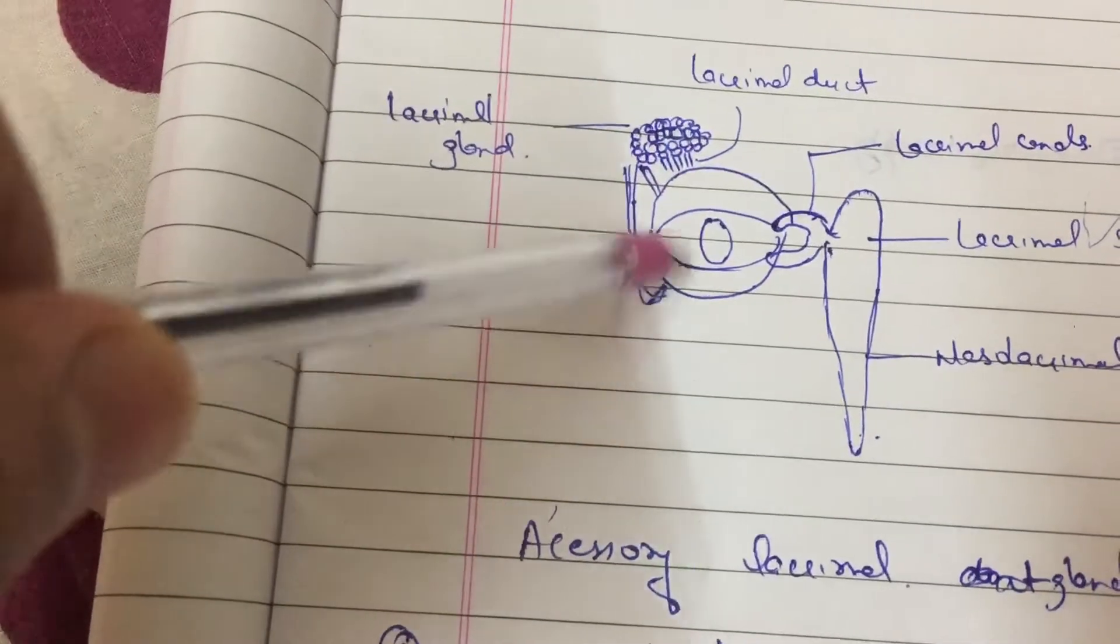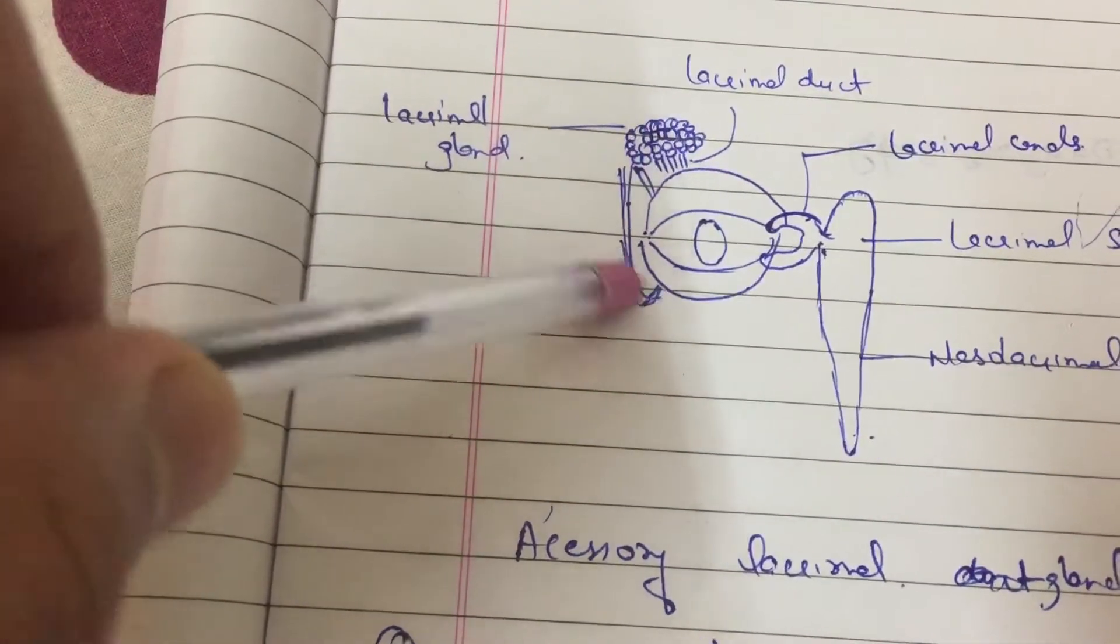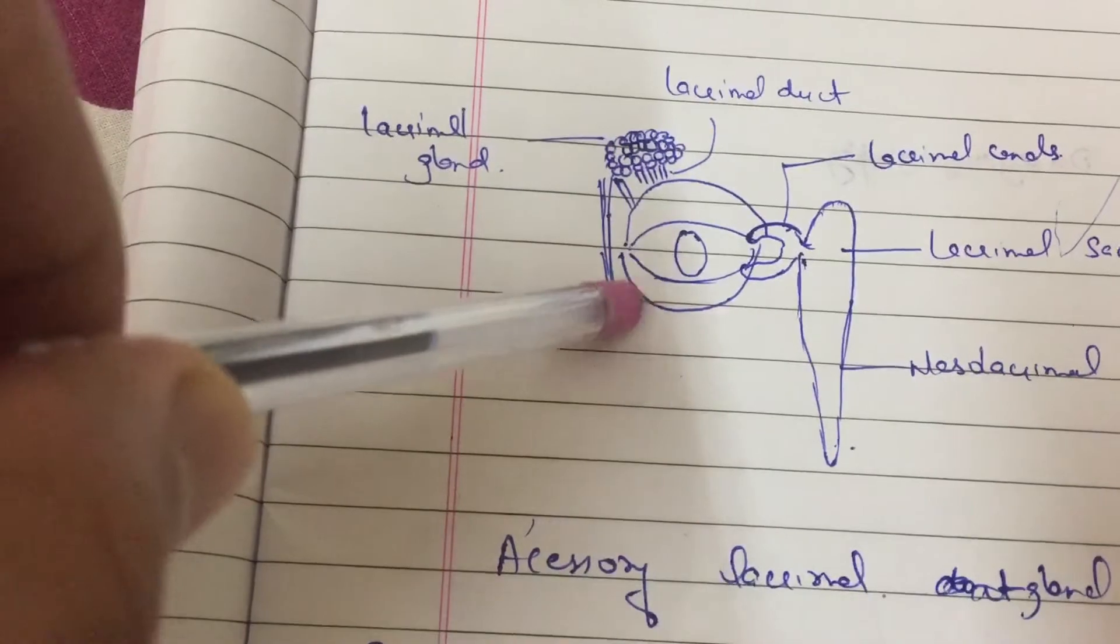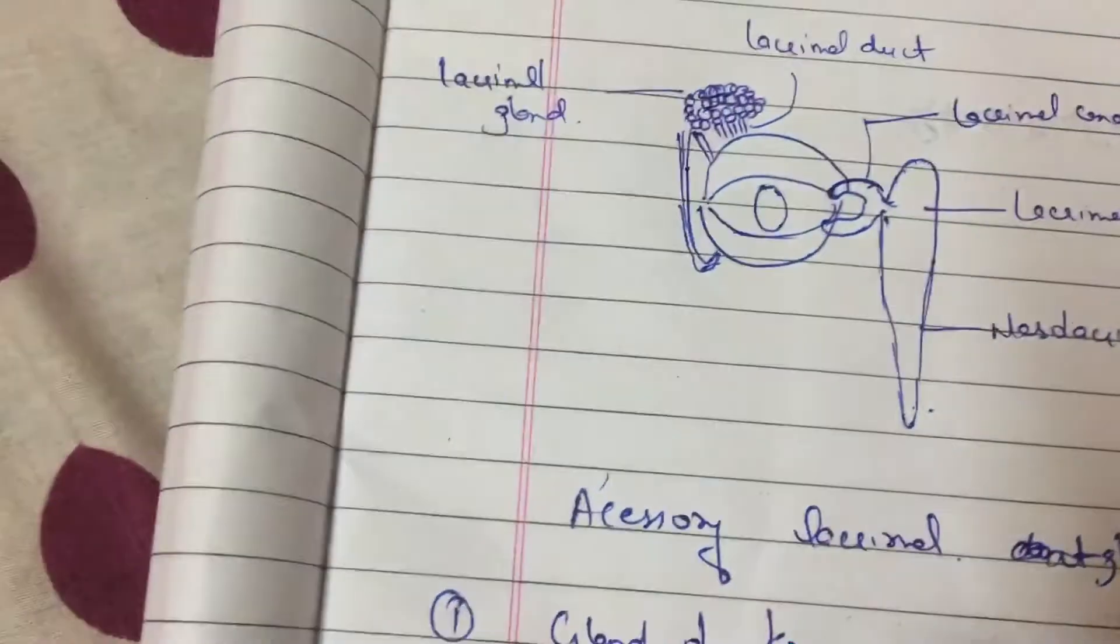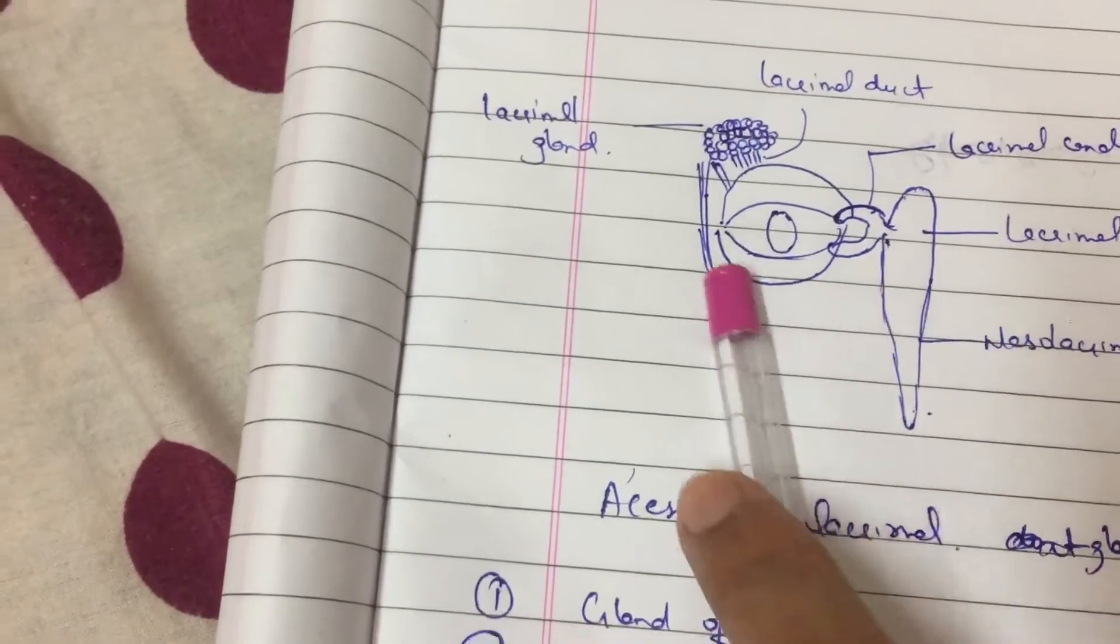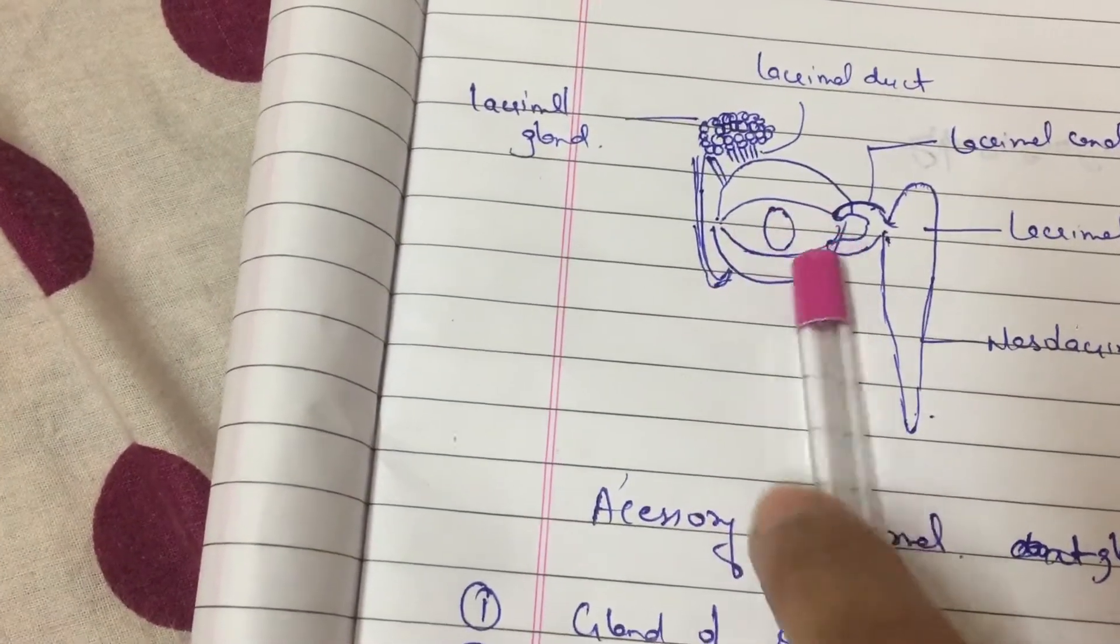Into the eye, these are the accessory lacrimal glands which are present near the lower palpebral fissure. Then this tear film is taken about from the two puncta.